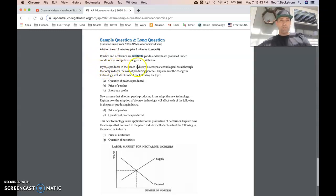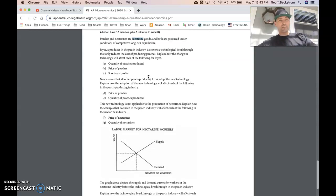So Joyce, a producer in the peach industry, discovers a breakthrough that reduces Joyce's cost of producing peaches. The setup to this part of the question leaves a little question in my mind about, hey, is this technology widely adopted? But if I read the whole question first, I'll notice later in the second part of the question narrative that it implies that previously other peach producers had not been incorporating that new technology, and then they do. So up here for part A, for Joyce, the quantity of peaches that Joyce produces is going to increase because Joyce's marginal cost is going to fall based upon that technological breakthrough.